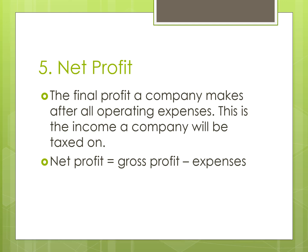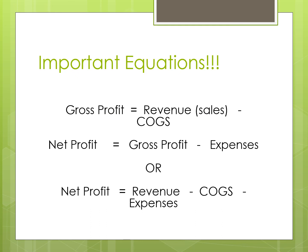Net profit is what we see at the end of the income statement — the final bottom line. You take your gross profit calculated earlier and take away all other expenses to get your net profit. The key equations to know for this financial statement are: gross profit = revenue minus COGS, and net profit = gross profit minus expenses. You can also combine them as net profit = revenue minus COGS minus expenses.